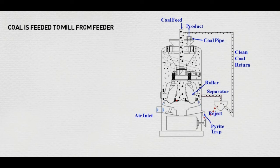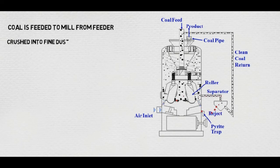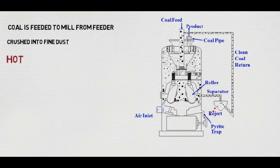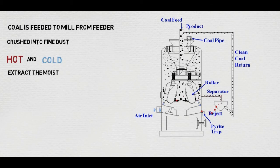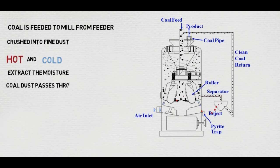The coal enters into the mill from the feeder. The roller is used to crush the coal into fine dust, and the waste material goes into the MRS, which is the mill rejection system. By the separator, the mixed airflow — that is, the hot and cold air — enters into the mill for extraction of the moisture contained in the coal.